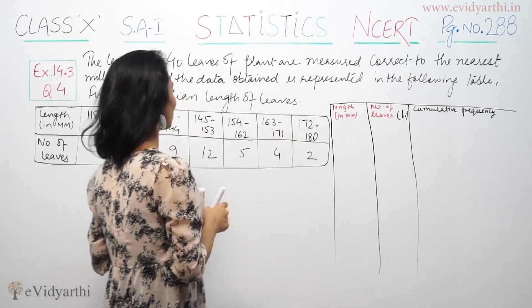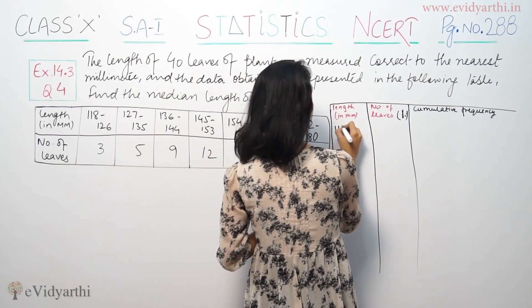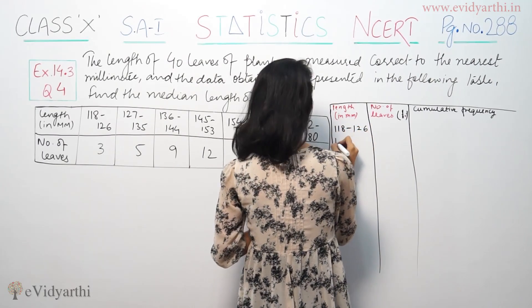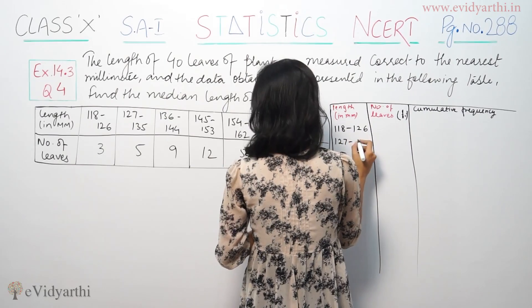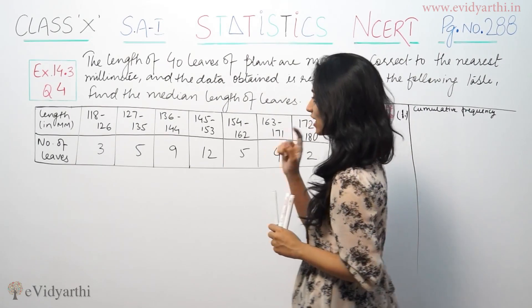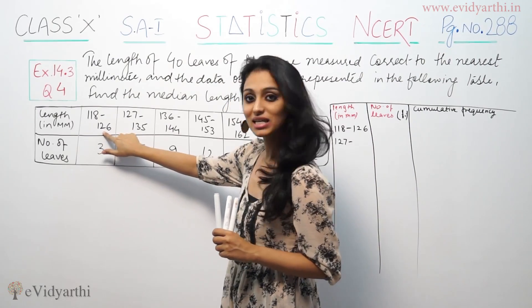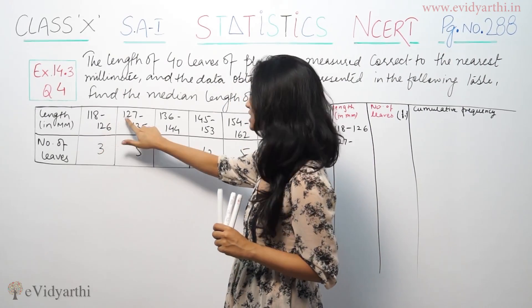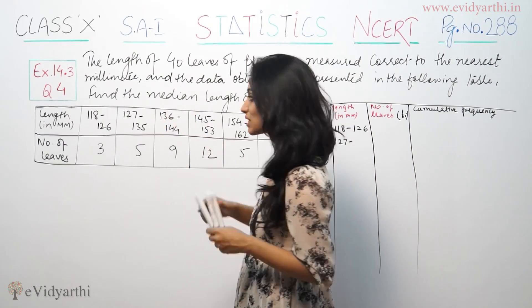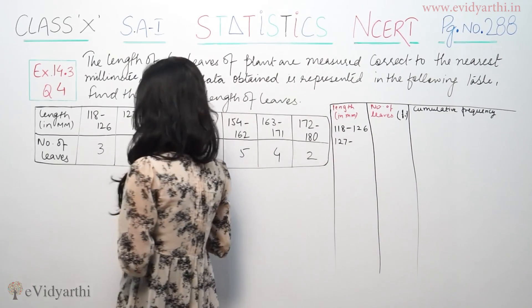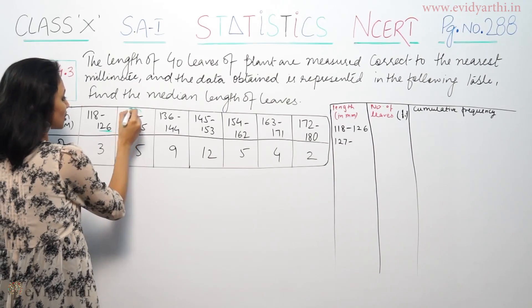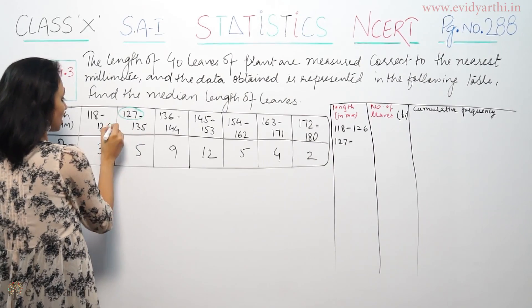The length in millimeters is given. The values range from 118 to 126, 127 to 135, and so on. We can see here that the data is not continuous, which is why we need to adjust it.